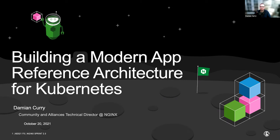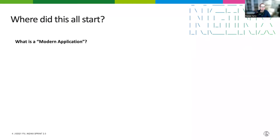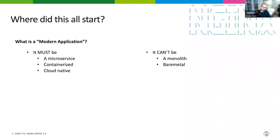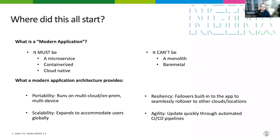Like many projects, we have to go back to the beginning and talk about where this all started. It really came about with everybody asking: what is a modern application? You hear things like it must be a microservice, it must be containerized, it must be cloud native. But really, the outcomes are more important than the pieces. The four main outcomes we've identified are portability, scalability, resiliency, and agility.